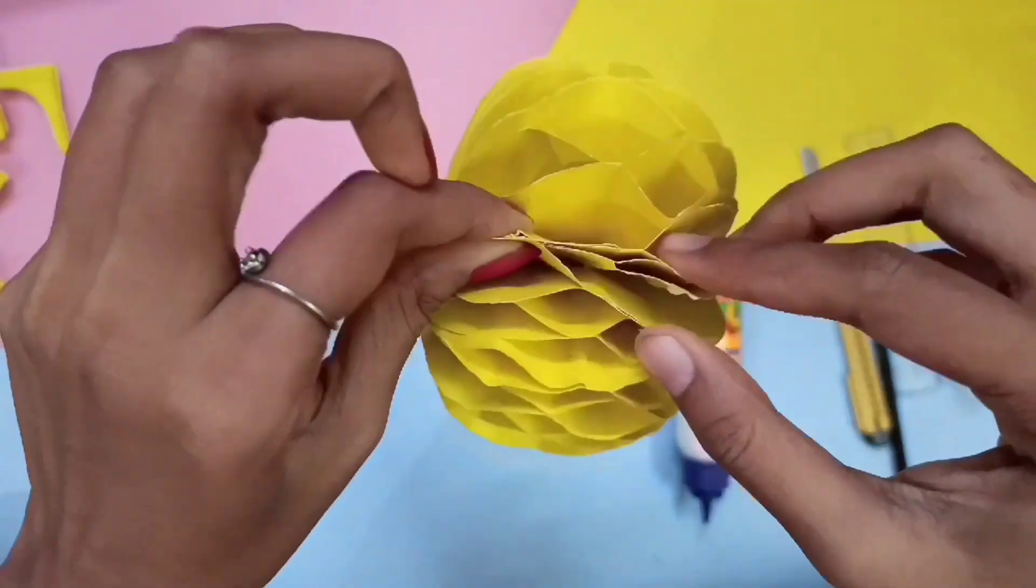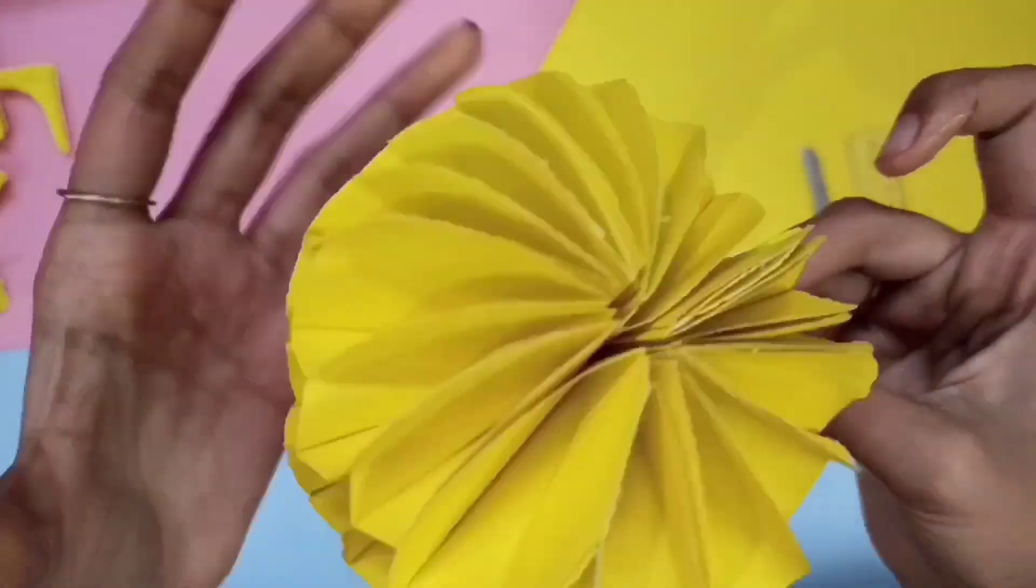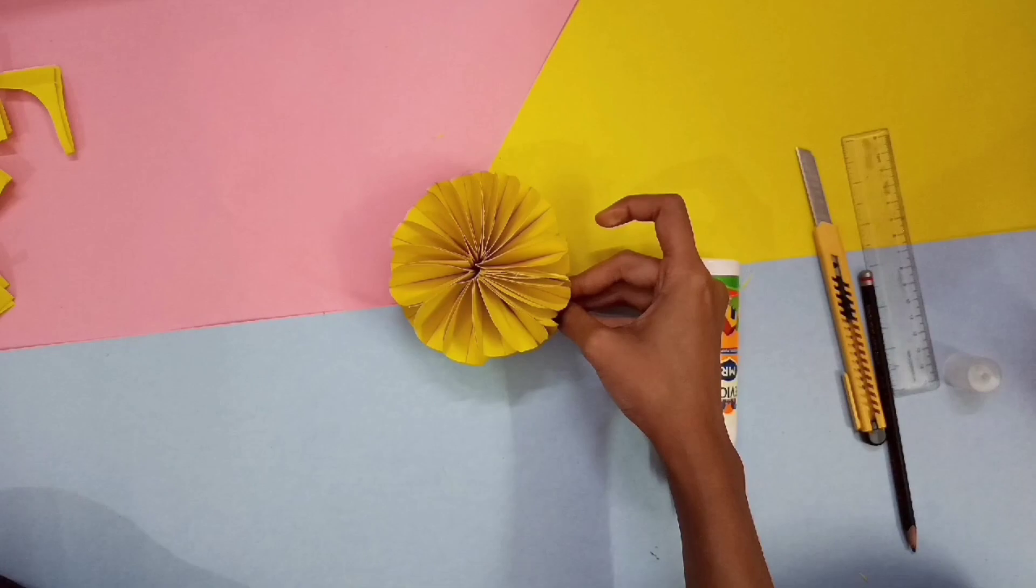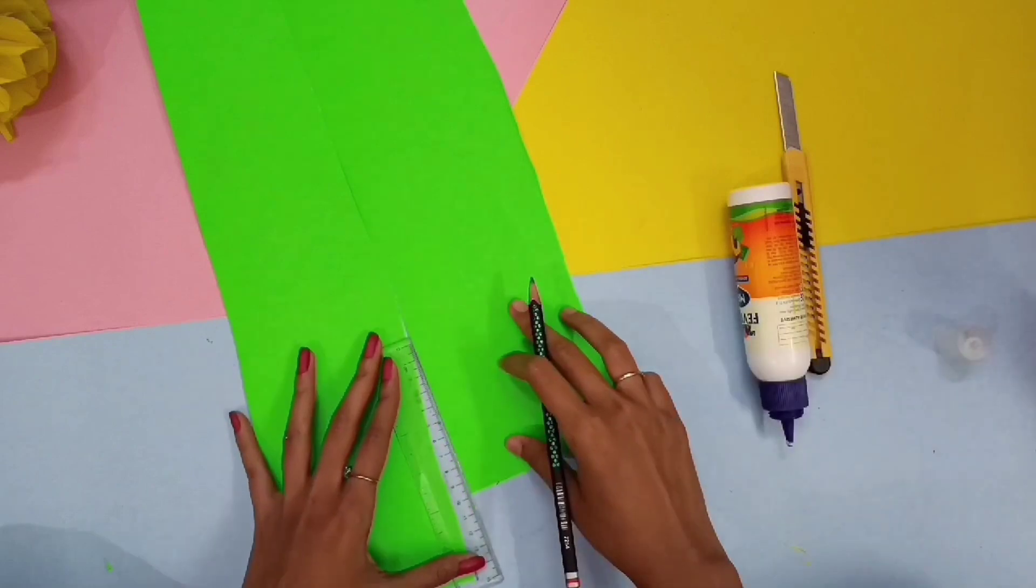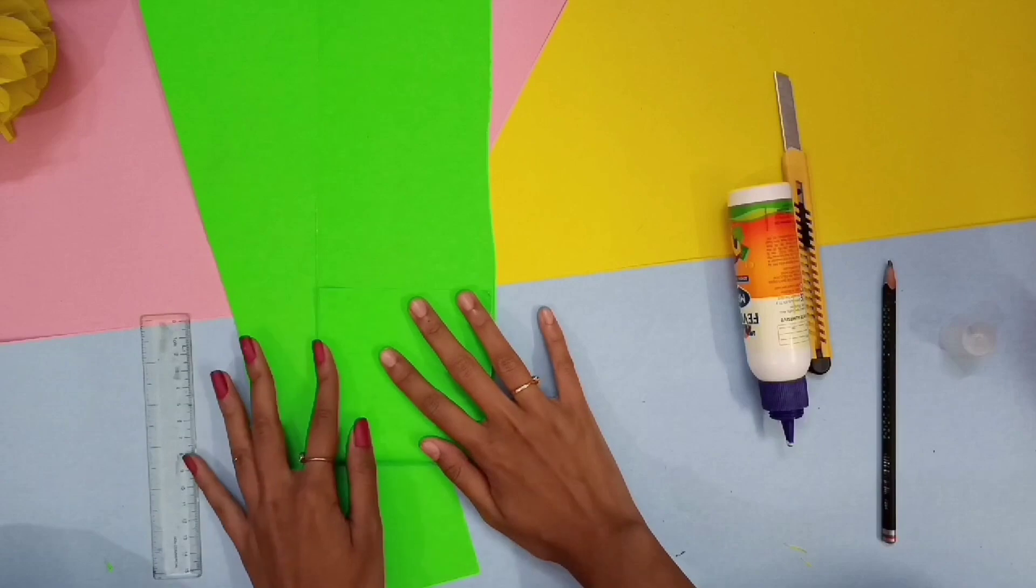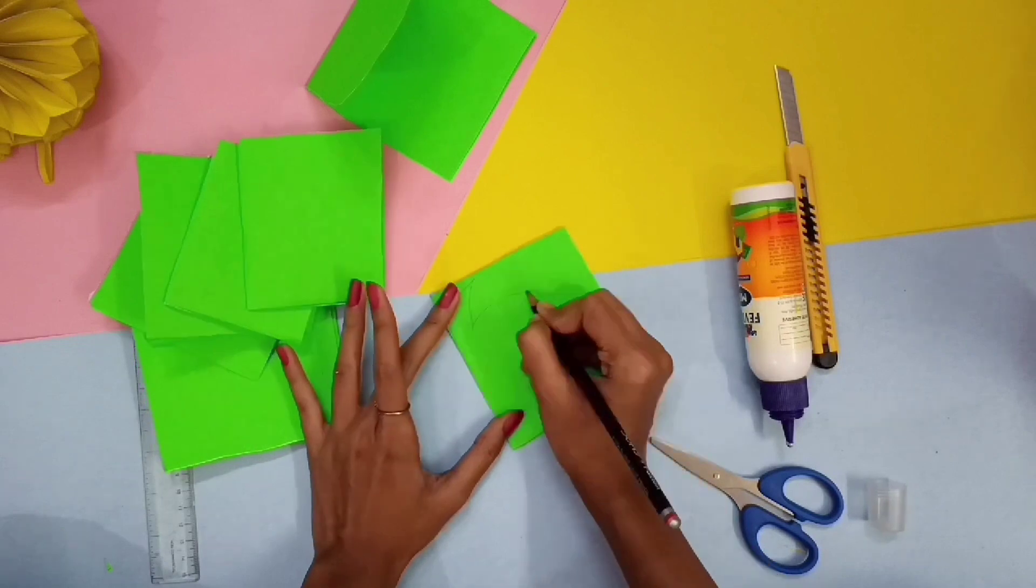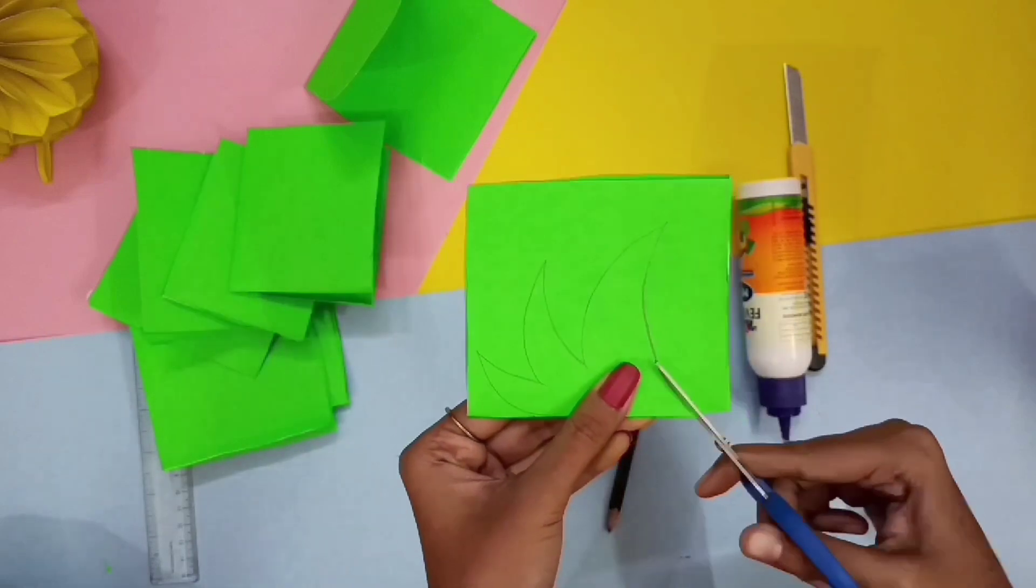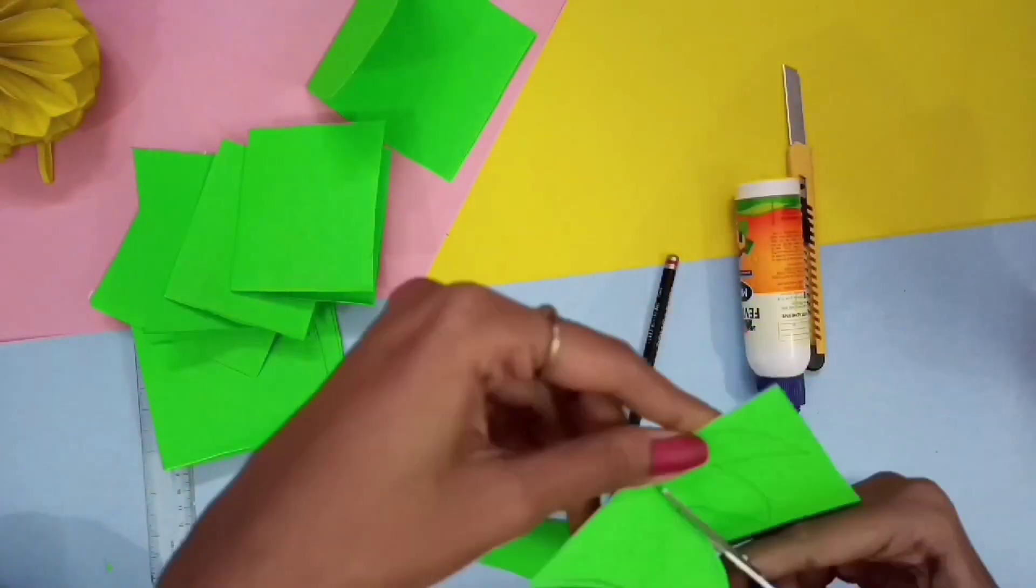Let it dry and your paper pineapple is ready. Now for the leaves I am going to cut the green color paper into half leaf shape. I am going to fold the paper and draw a half leaf shape. Now I am going to roughly cut it out and you don't have to be perfect, you don't have to cut it perfectly.